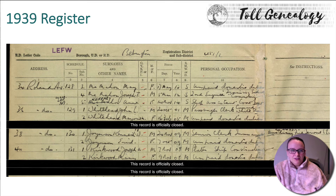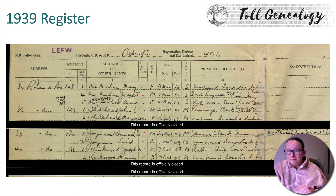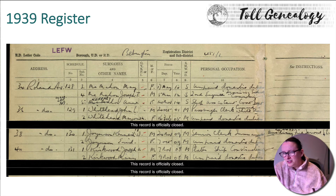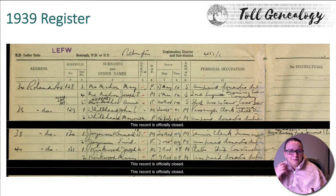The final record we can make use of that's like a census but isn't a census is the 1939 Register — a Register of Households taken in September 1939 for the purposes of the impending World War II. It gives you the address, who was living there, their dates of birth, and their occupation. Here Kenneth is listed as a senior clerk in insurance, but we also know he's working for the Auxiliary Fire Service.